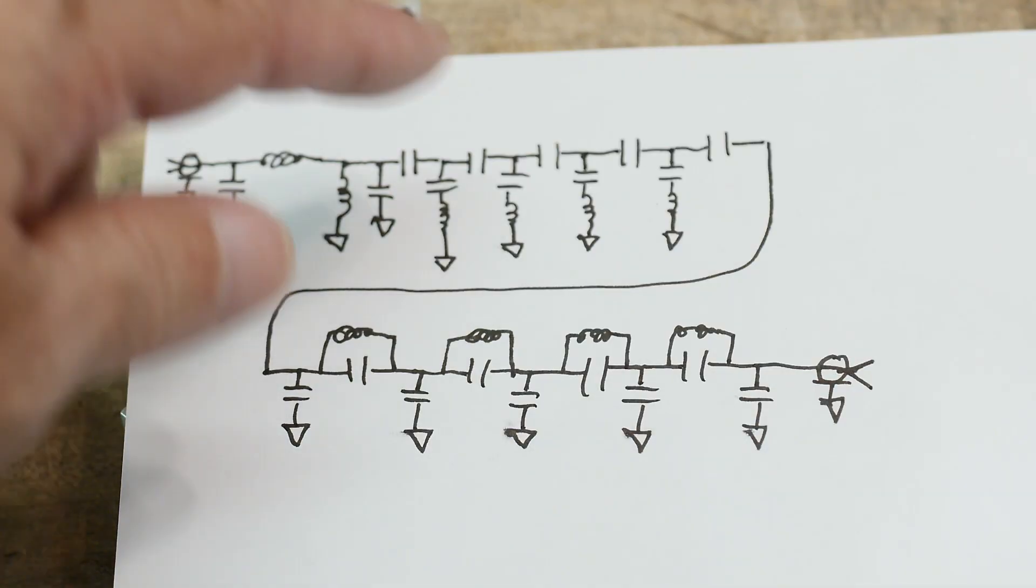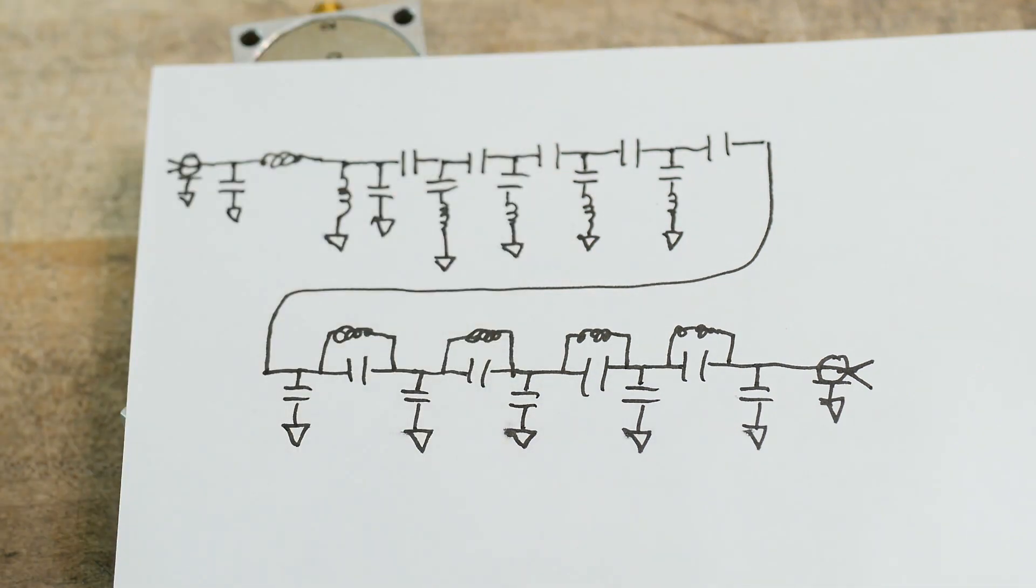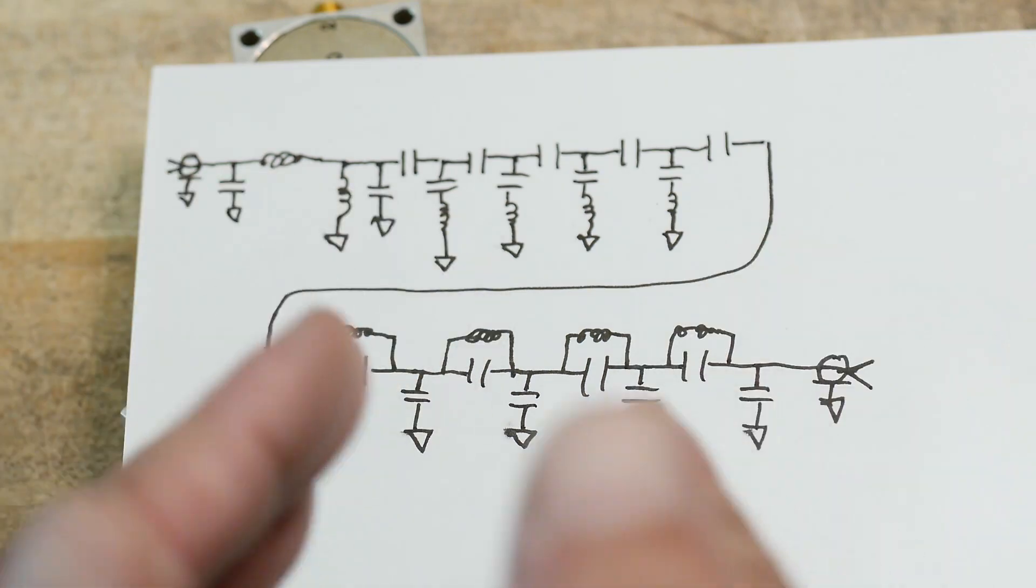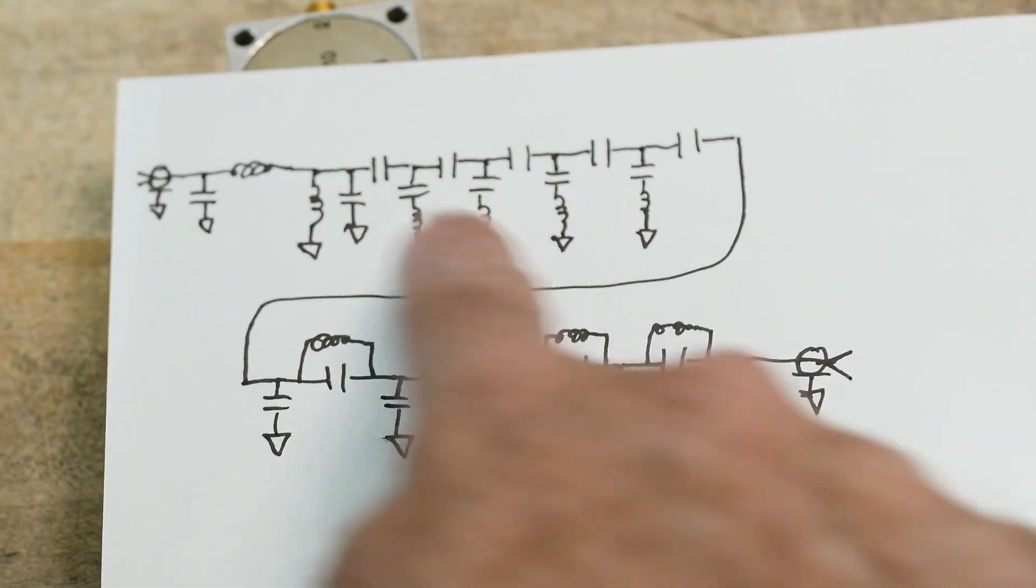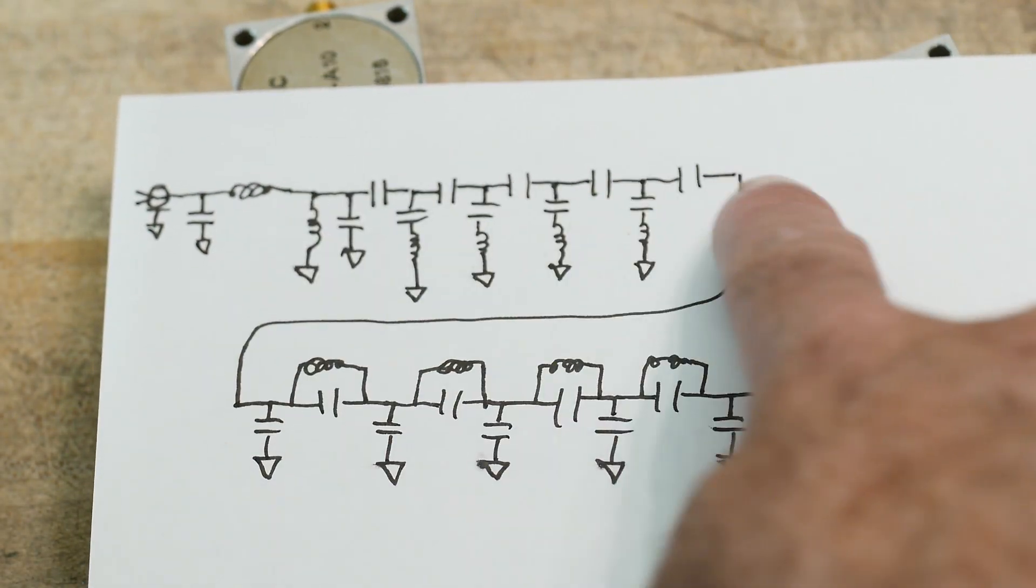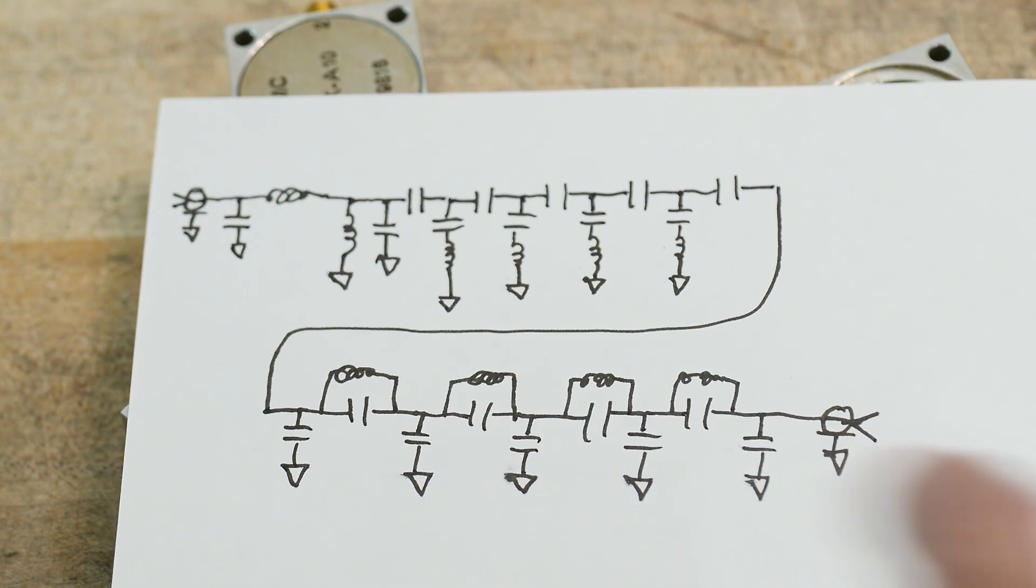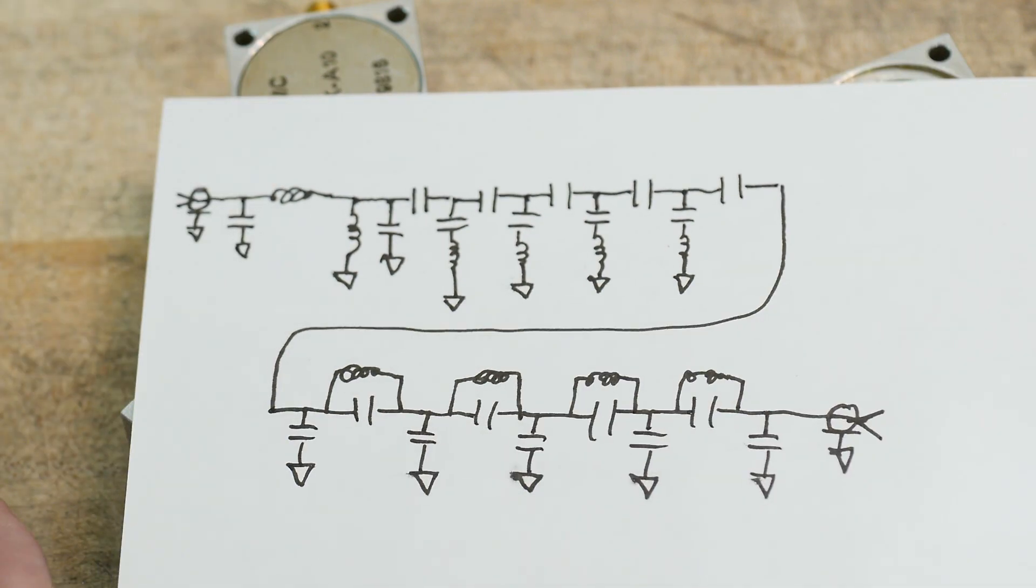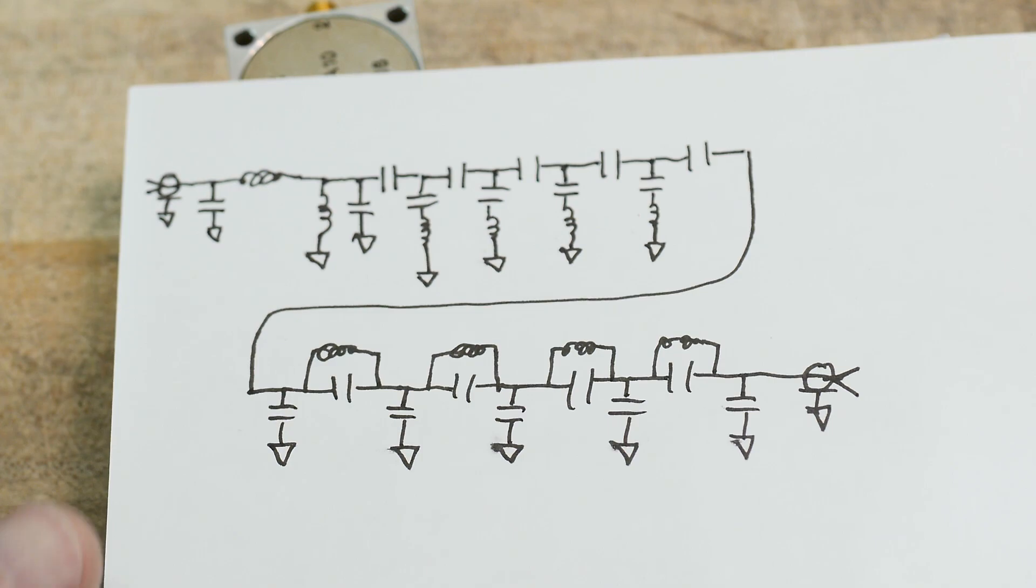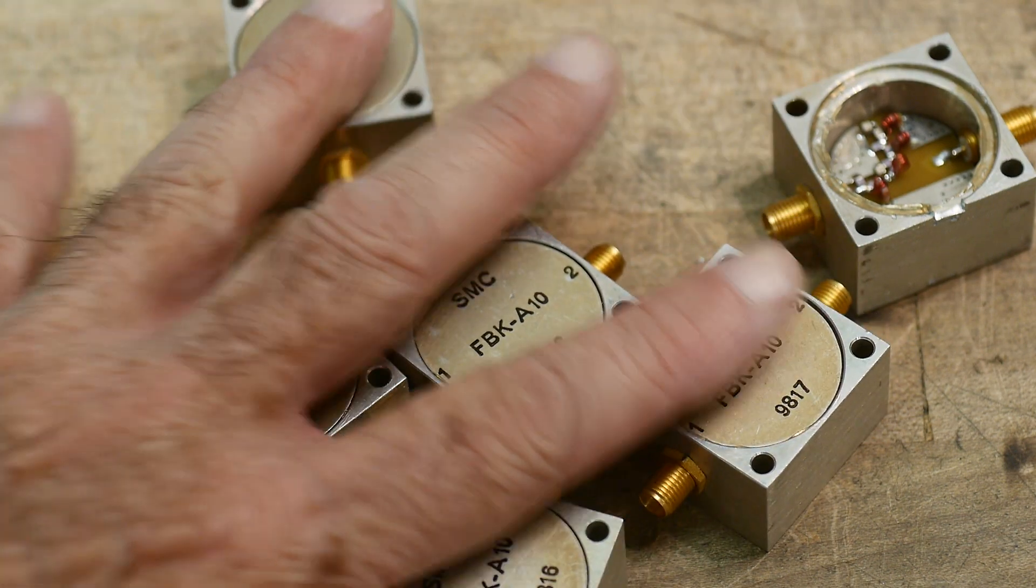In order to make a bandpass, you make a high-pass section and a low-pass section, and then you put those two sections together and it makes the bandpass. So here's the high-pass section, here's the low-pass section, and together they make a bandpass.